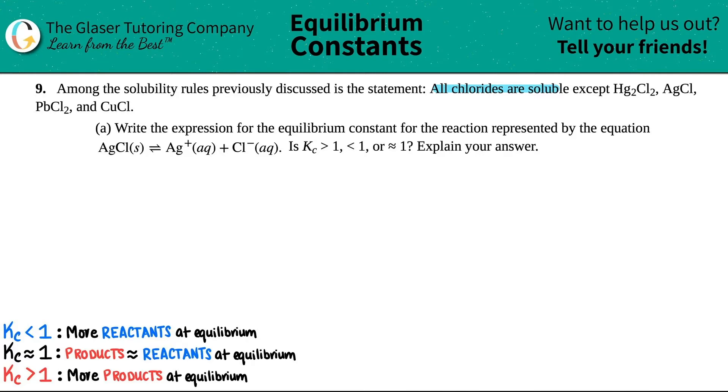And then we have letter A. Write the expression for the equilibrium constant for the reaction represented by the equation. AgCl solid yields Ag plus aqueous plus Cl minus aqueous. And then they say, is the Kc greater than one, less than one, or roughly equal to one? And then explain your answer.